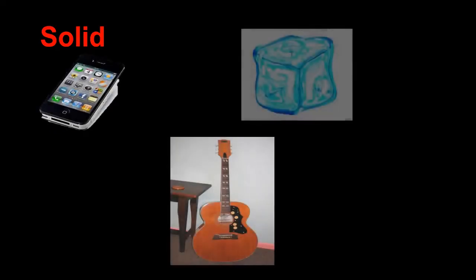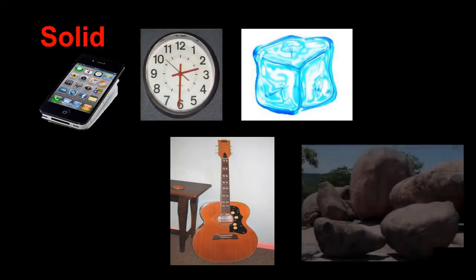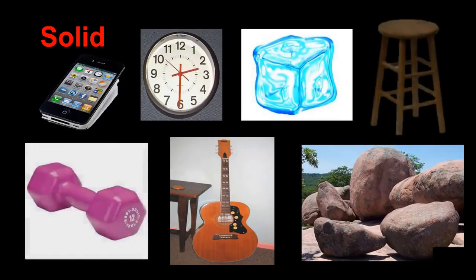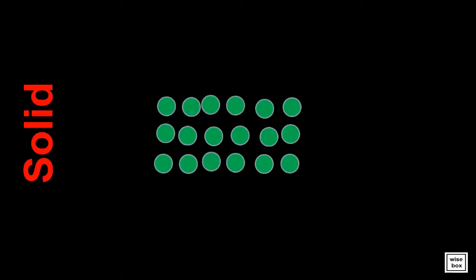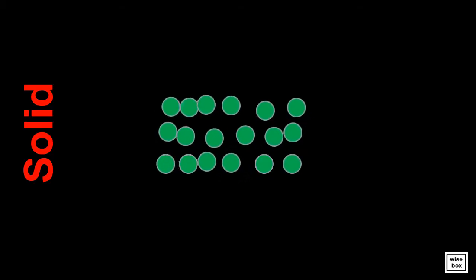Here are some examples of solid substances. Here is an illustration showing tightly packed particles of solid. It also shows the slow vibrating movements of the solid particles.